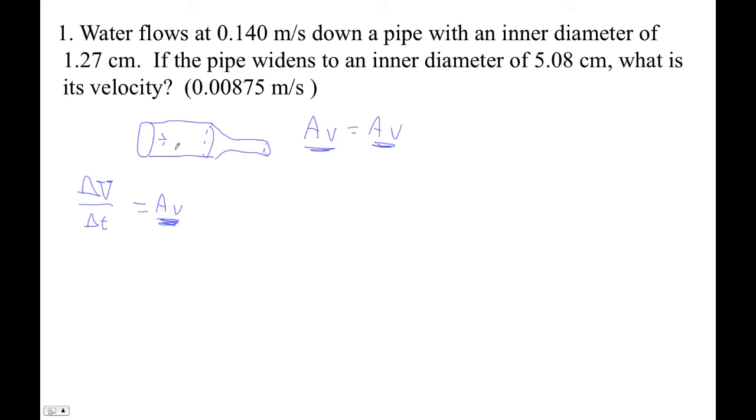We've got the inner diameter, I guess it's flowing this way. So it's narrow, and then it gets wide. The first area is the area of the narrow pipe. So we go pi times 0.0127 divided by 2, squared, pi r squared.